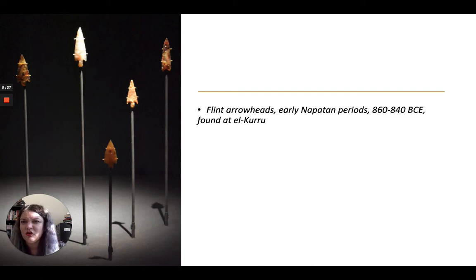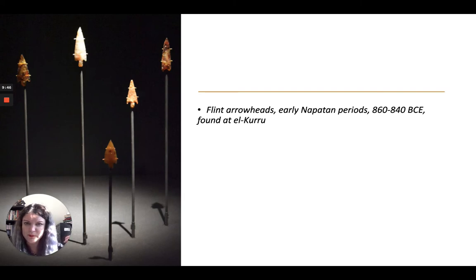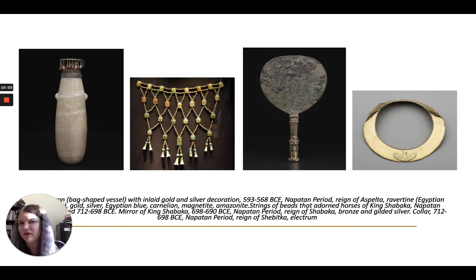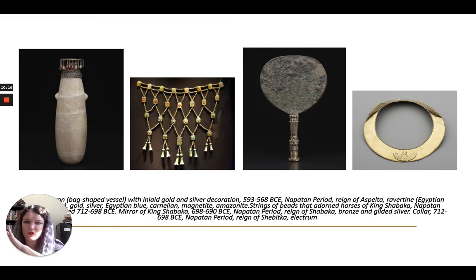The Kushites were well known for their archers. They made very successful weapons — arrows and bows. Here are some examples of flint arrowheads. And here are some more examples of the kinds of goods they created and traded. They worked with precious metals — gold, bronze, copper, and silver — and you can see the level of detail and fine jeweled detailing. The second image is a section of beading made of faience-glazed beads used to adorn the king's horse. Everything was very ornate and beautifully appointed.